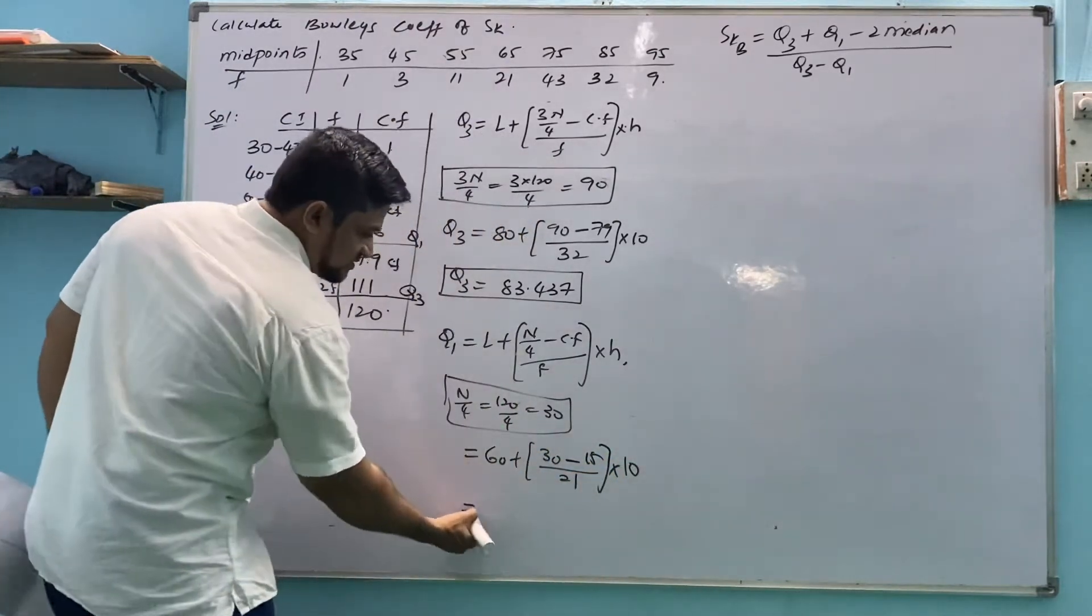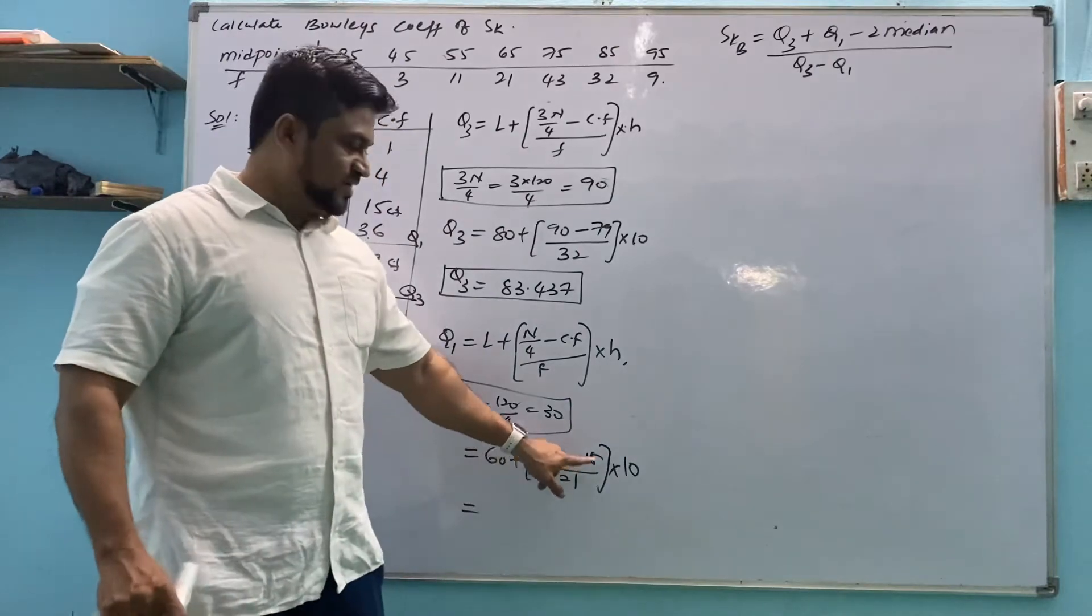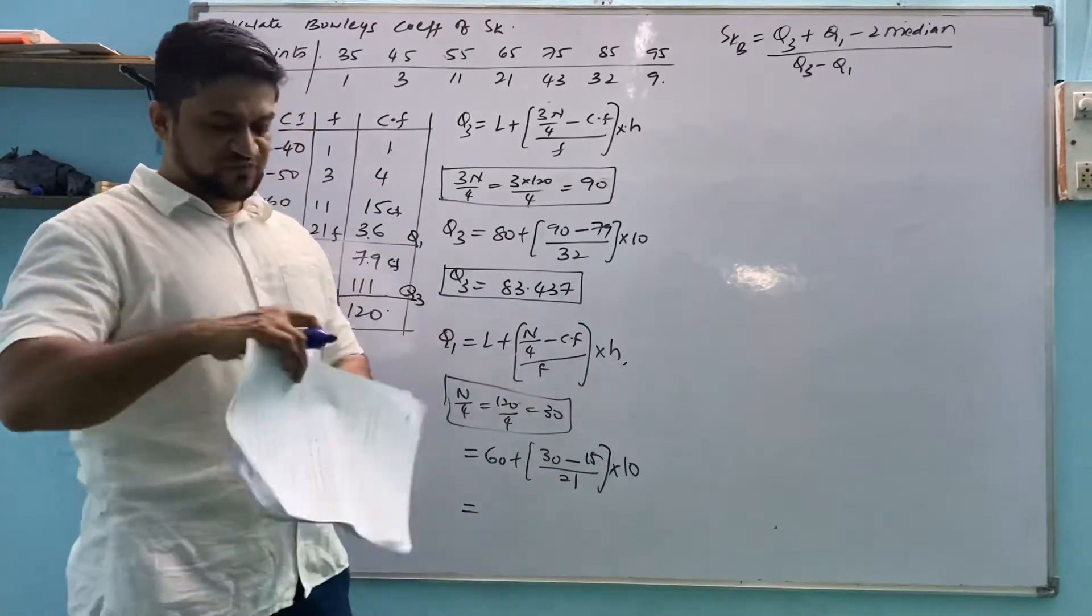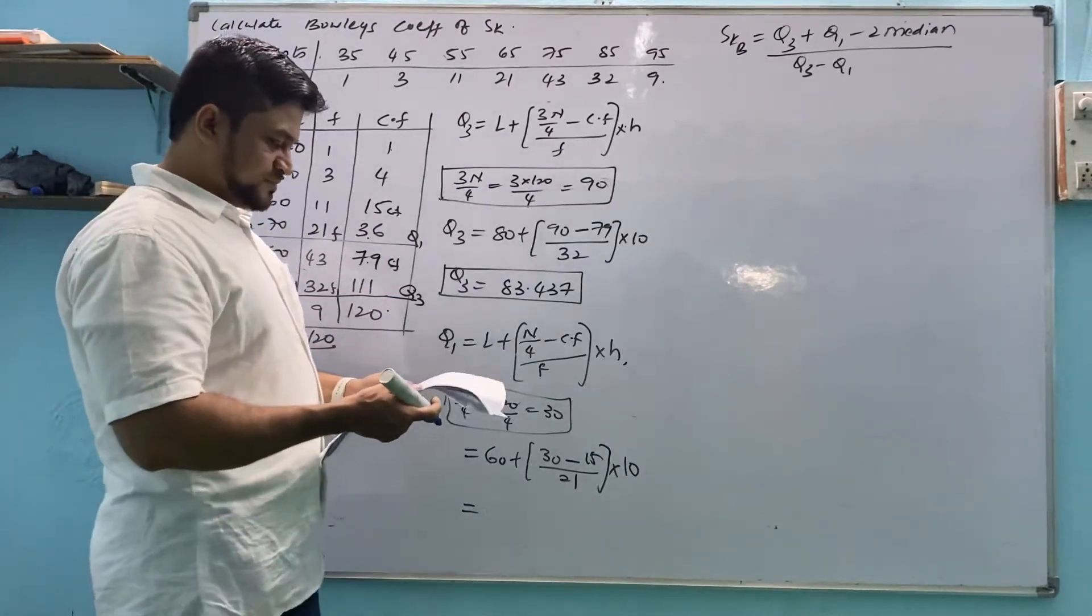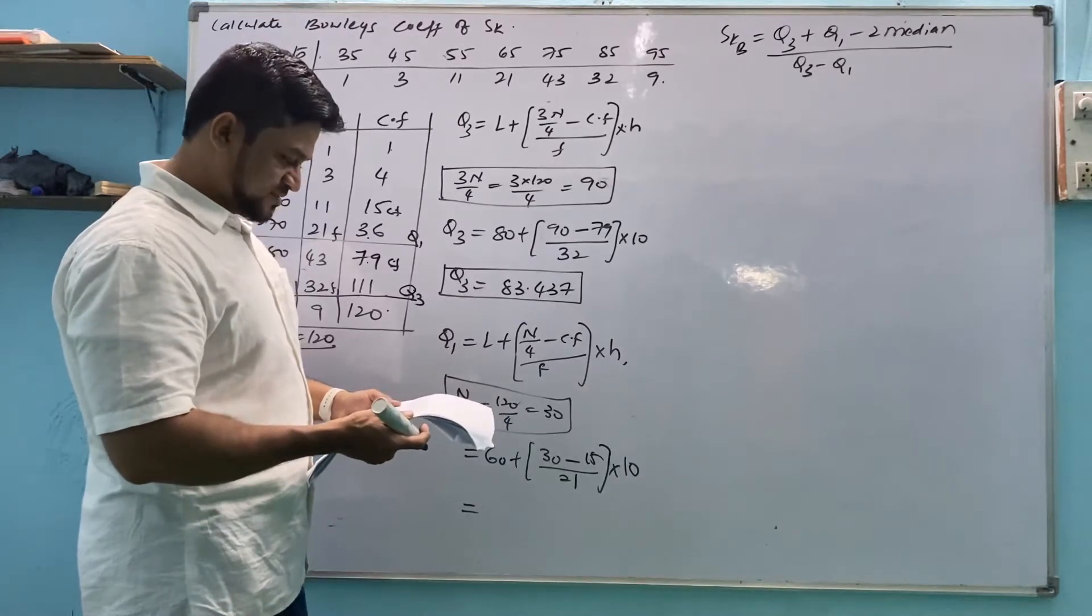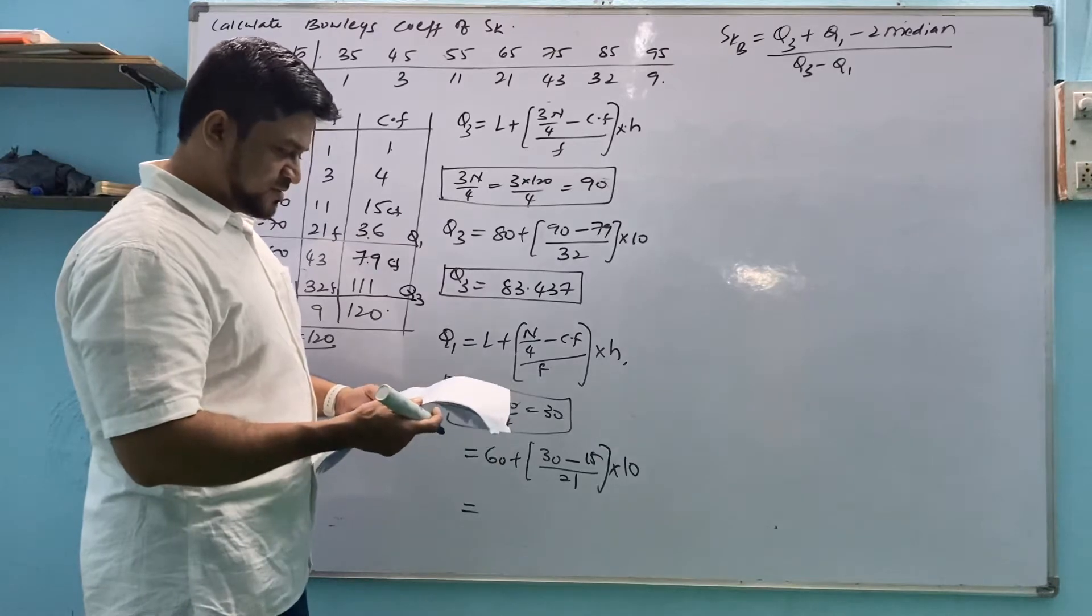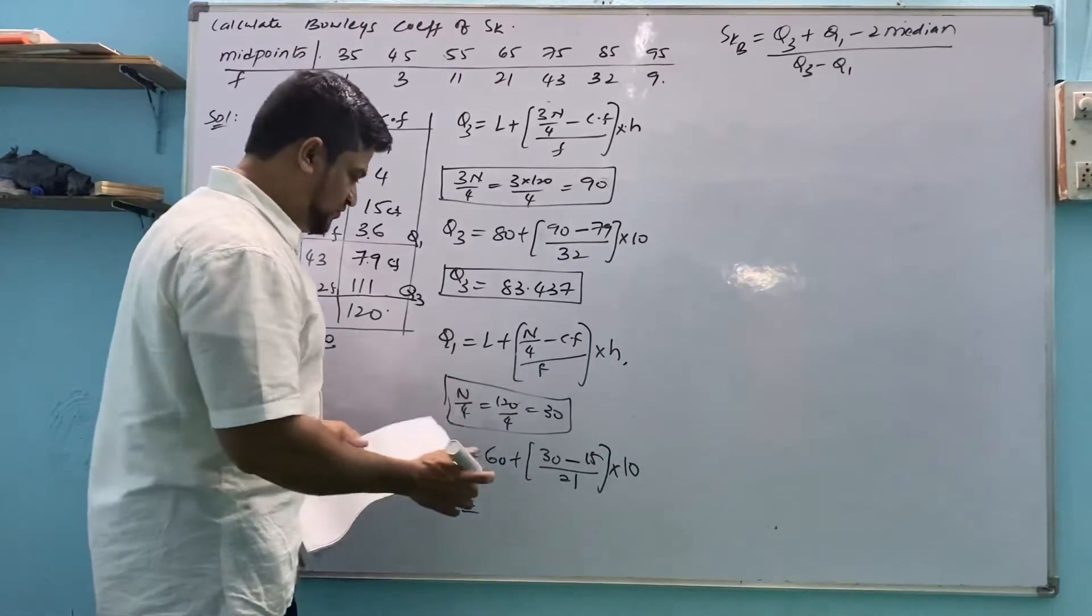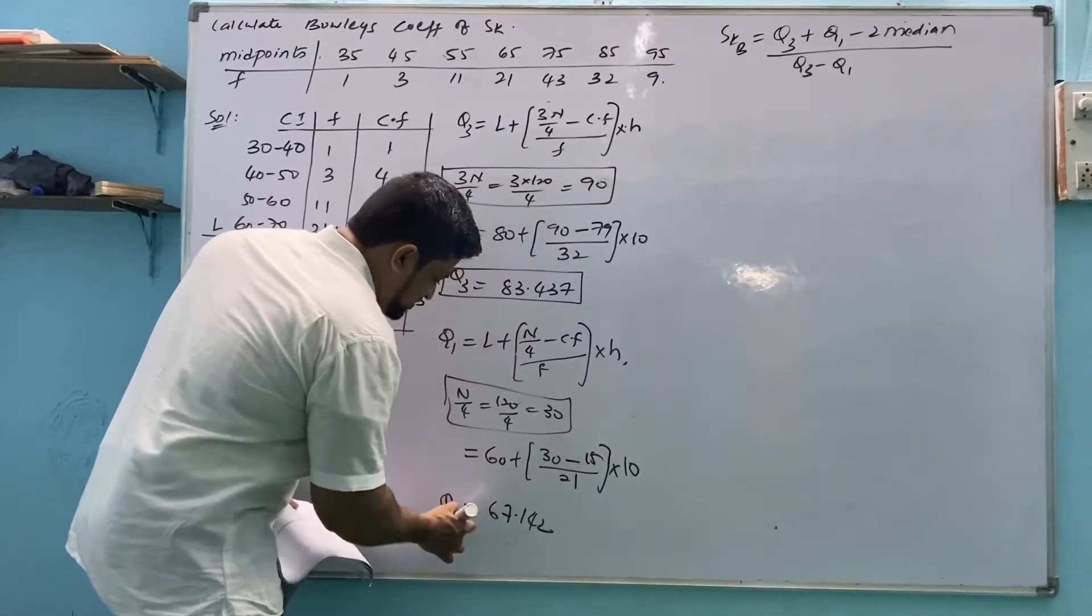Again same thing. Don't take 60 first on the calculator. 30 minus 15 into 10 divided by 21 plus 60. So if you do that you will get - 30 minus 15 is 15 by 21 into 10 - this is Q1, 67.142.